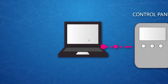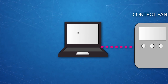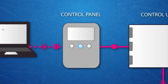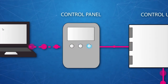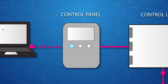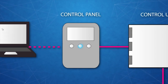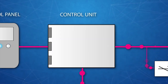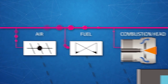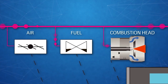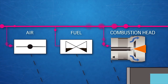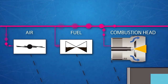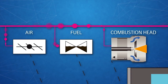Site personnel monitor system operations on a computer screen. The control panel is the user interface for the system. The control unit operates the burner. The servo motors operate and control air flow, fuel flow, and combustion head positions.